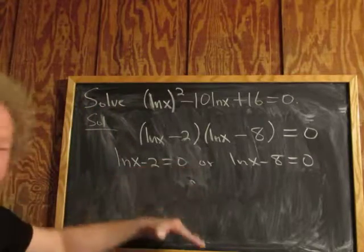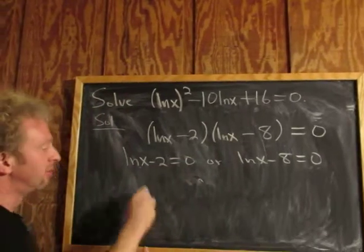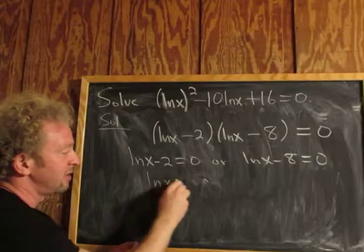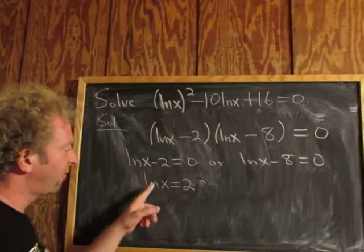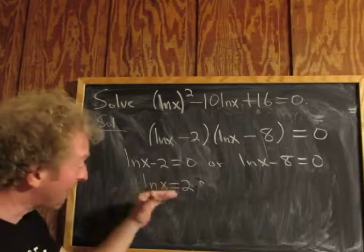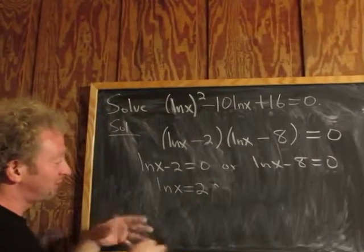Now solve each equation. Adding 2 to the first equation gives ln x = 2. To solve for x and get rid of the natural log,